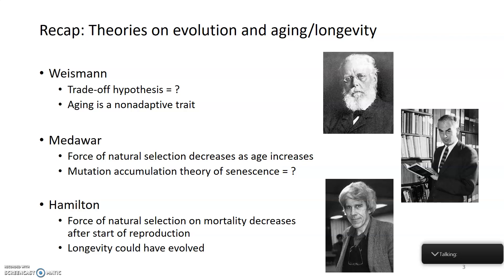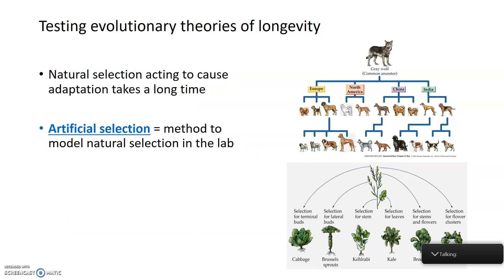These three men — Weissman, Medawar, and Hamilton — were important for developing the theoretical idea of how longevity and aging may have evolved. But in order to test those theories, we needed to do some experiments. Trying to measure evolutionary theories of longevity is difficult because natural selection acting to cause adaptation takes a very long time. So in the lab, we use a method known as artificial selection.